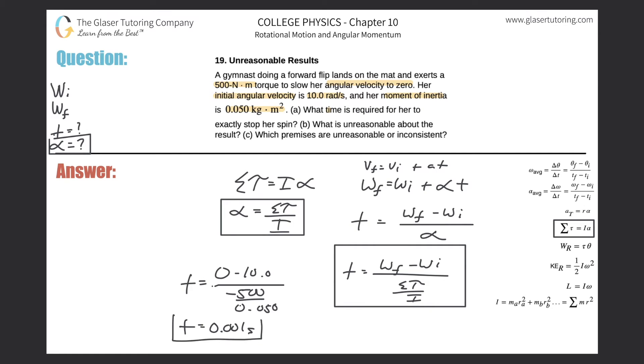Now it says Part B: what is unreasonable about this result? Well, do you think it took her one millisecond? I mean, that's what this is - this is one millisecond. I doubt it. That would be kind of insane.